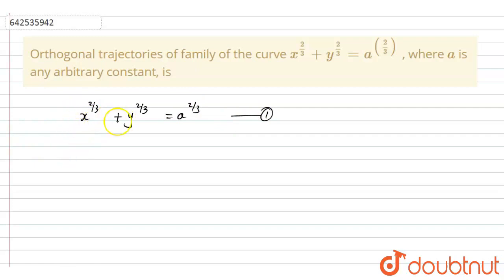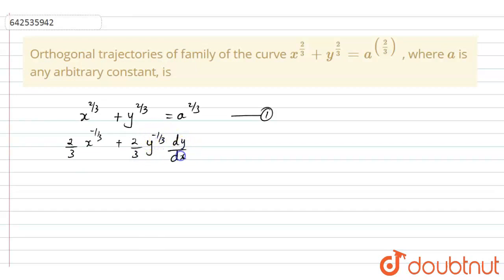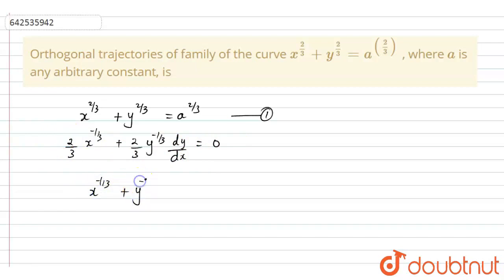First, I'm going to differentiate this with respect to x. It will become (2/3)x^(-1/3) + (2/3)y^(-1/3) · dy/dx = 0, since the right-hand side is a constant. Taking (2/3) as common outside and moving it to the right-hand side gives x^(-1/3) + y^(-1/3) · dy/dx = 0.